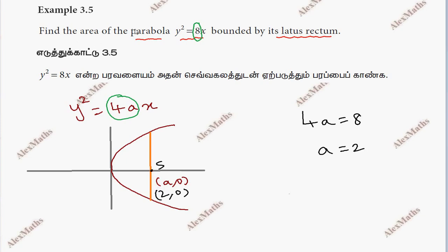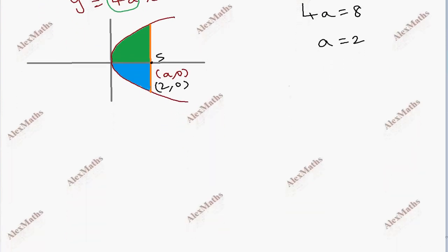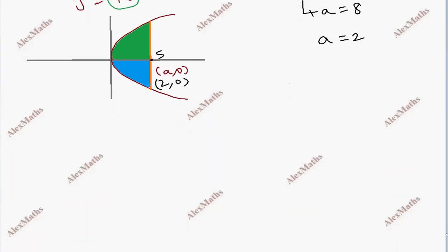The question asks us to find the area of the parabola bounded by its latus rectum. If we look at the top region and the bottom region, the parabola is symmetric. So the required area equals 2 times the integral over the top region. This area is bounded by the left extreme and right extreme.